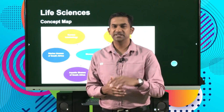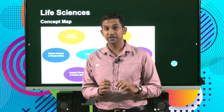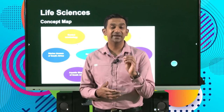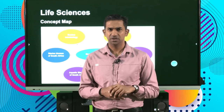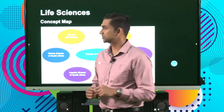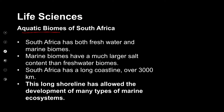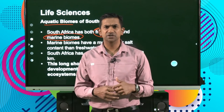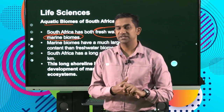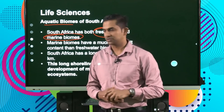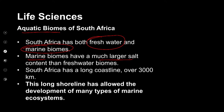We've been looking at biomes. In the previous segments, we looked at terrestrial biomes. Now we're going to look at aquatic biomes. When we look at aquatic biomes in South Africa, we have freshwater biomes and marine water biomes. Freshwater biomes are water bodies that do not have salt, while marine biomes have a presence of salt in the water and are much larger in terms of area.